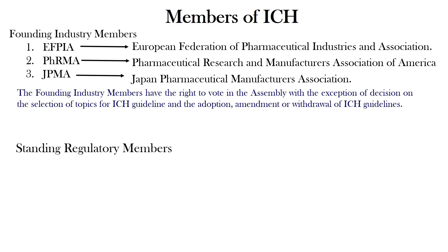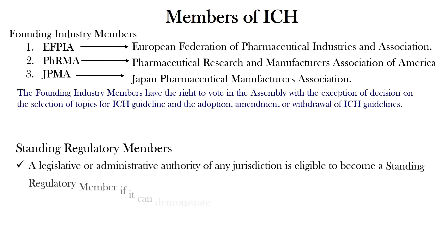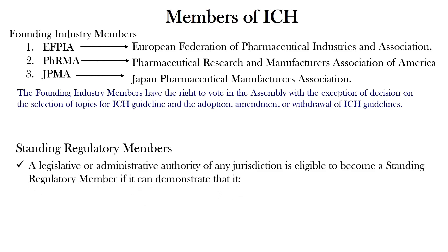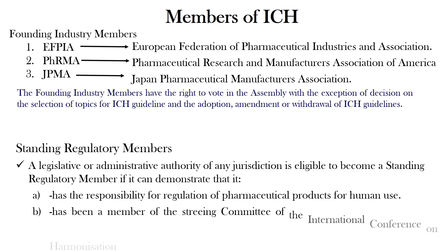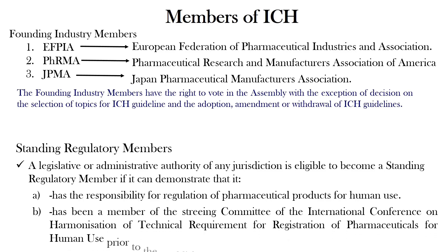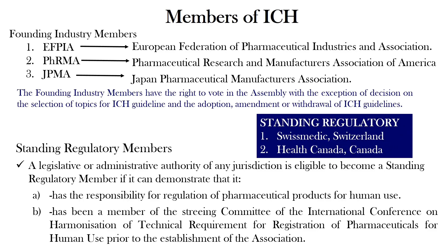Coming to the standing regulatory members. A legislative or administrative authority of any jurisdiction is eligible to become a standing regulatory member of ICH if it can demonstrate that it has the responsibility of regulation of pharmaceutical products for human use and it has been a member of a standing committee of the International Conference on Harmonization prior to the establishment of the association. Currently, there are two standing regulatory members: Swissmedic of Switzerland and Health Canada of Canada.